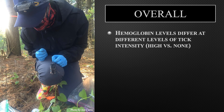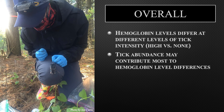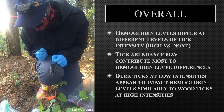Overall, hemoglobin differed at different levels of tick intensity, though the most significant difference was between a population with a high infestation rate and a population with little to no infestation, suggesting that low infestation rates do not impact deer mice detrimentally on a hematological level. Tick abundance may contribute most to hemoglobin level differences on an individual level, though only one of our three sites supports this claim. Deer ticks at low intensity appear to affect hemoglobin levels similarly to wood ticks at high intensities, possibly due to the bacteria deer ticks carry or a difference in the host's resistance to deer ticks relative to wood ticks. Our results suggest that deer mouse populations that will soon be introduced to deer ticks may have hemoglobin levels decrease more substantially compared to when wood ticks are introduced to a new mouse population. The susceptibility to tick infestations and their effects has the potential to alter ecosystem processes that can ultimately affect other host species as zoonotic diseases are transmitted from mice to ticks to other host species at higher trophic levels, including humans.